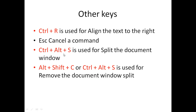Ctrl plus Alt plus S is used to split the document window, dividing Microsoft Word into several panes. Alt plus C plus C or Ctrl plus Alt plus S can also be used to remove the document window split.